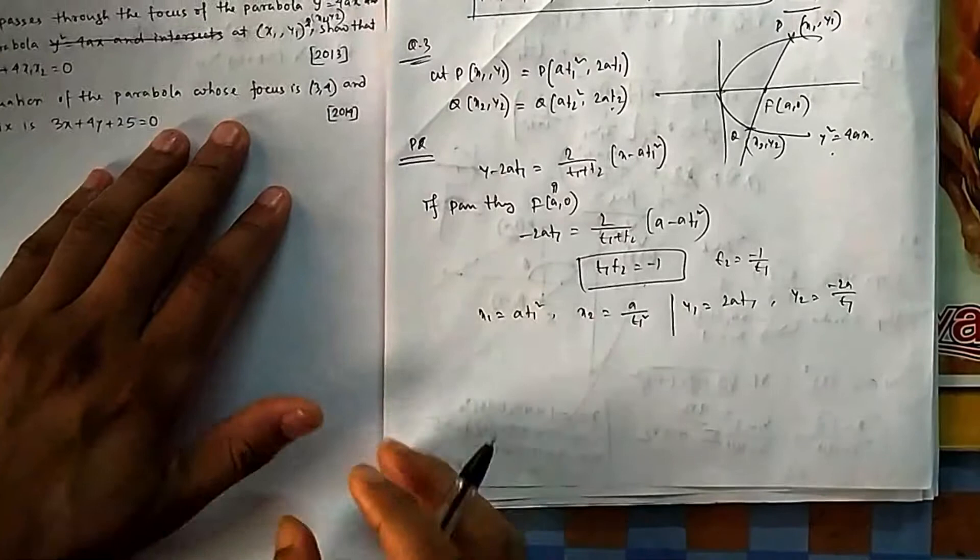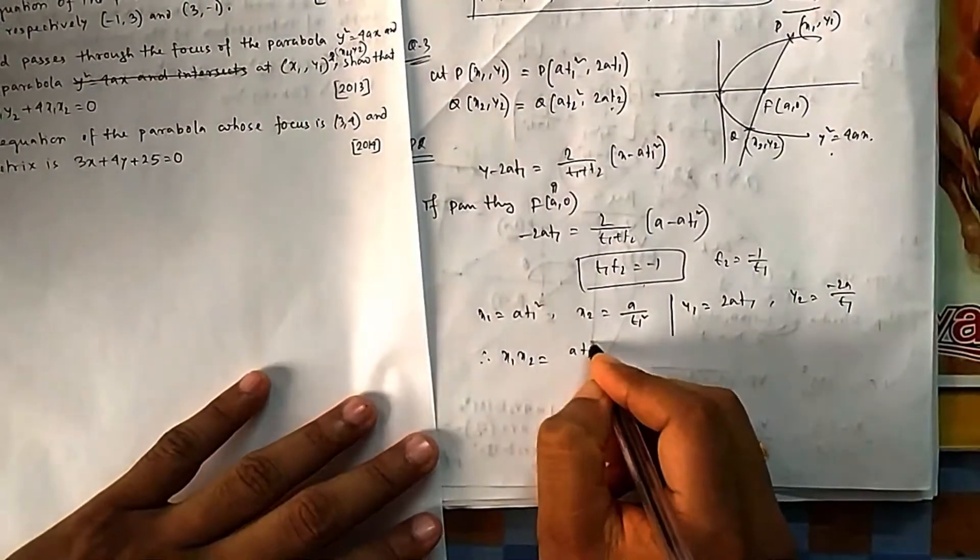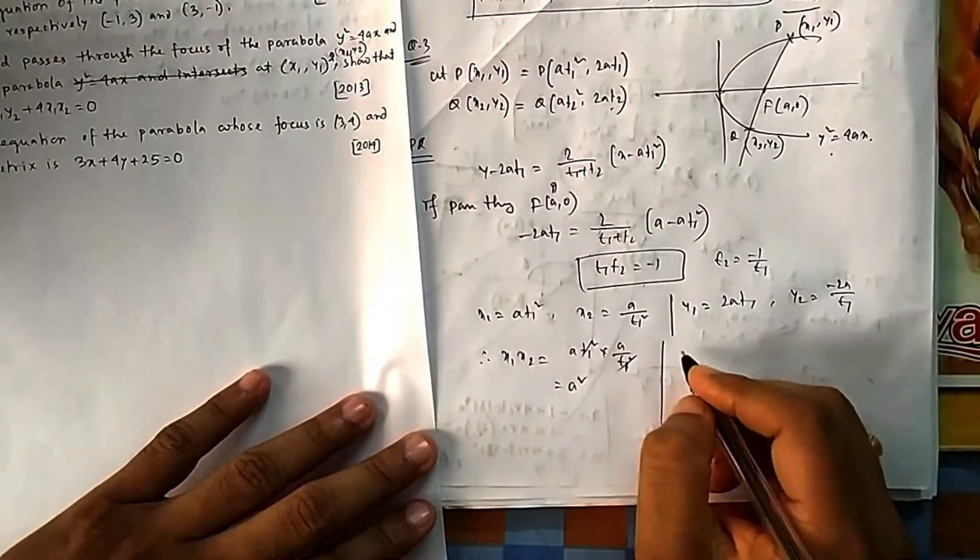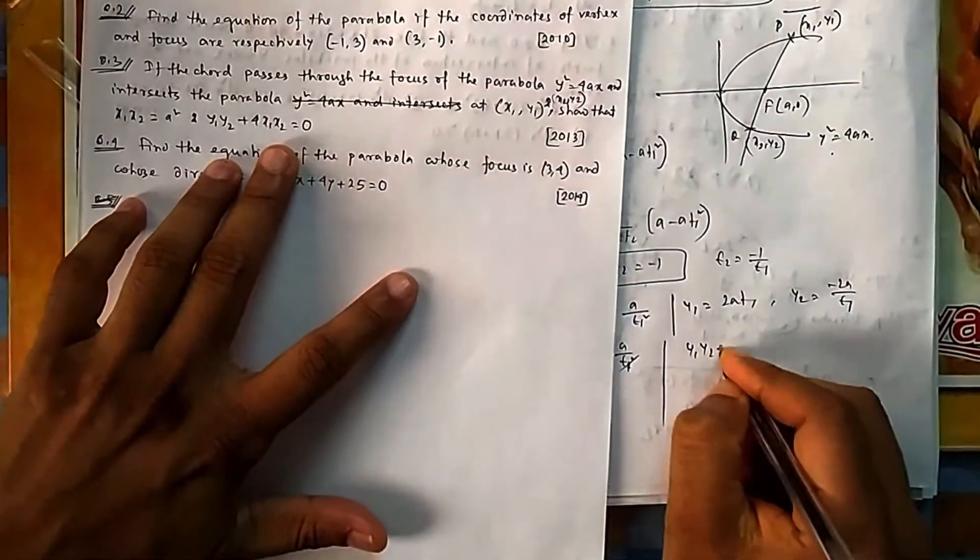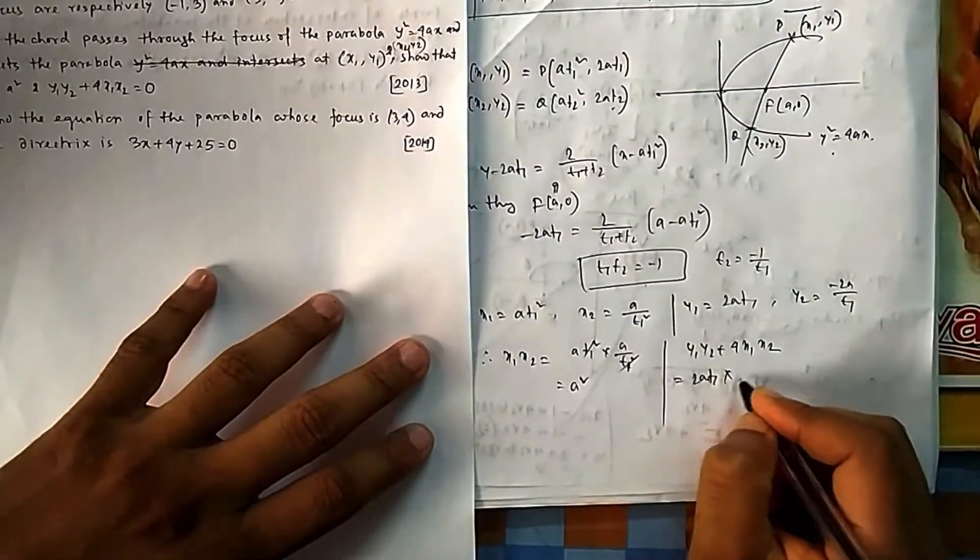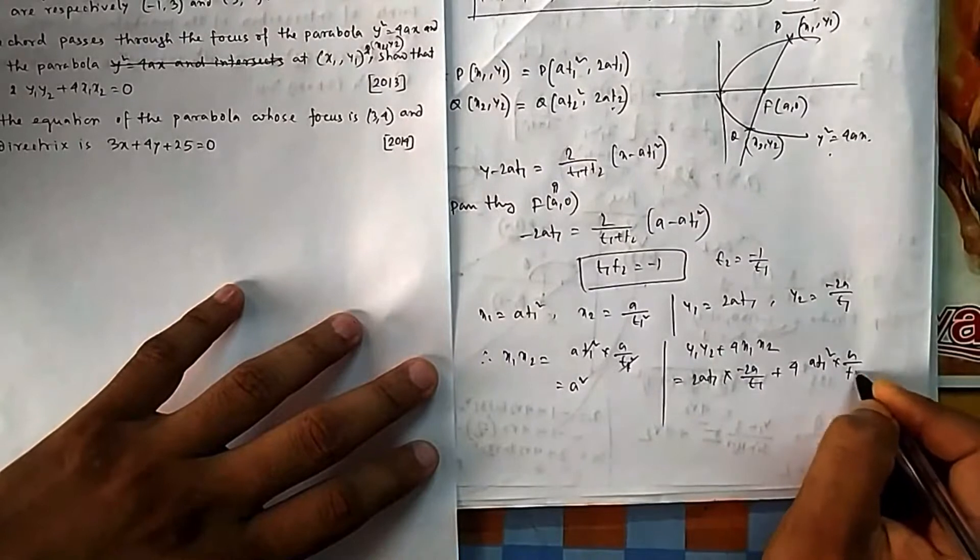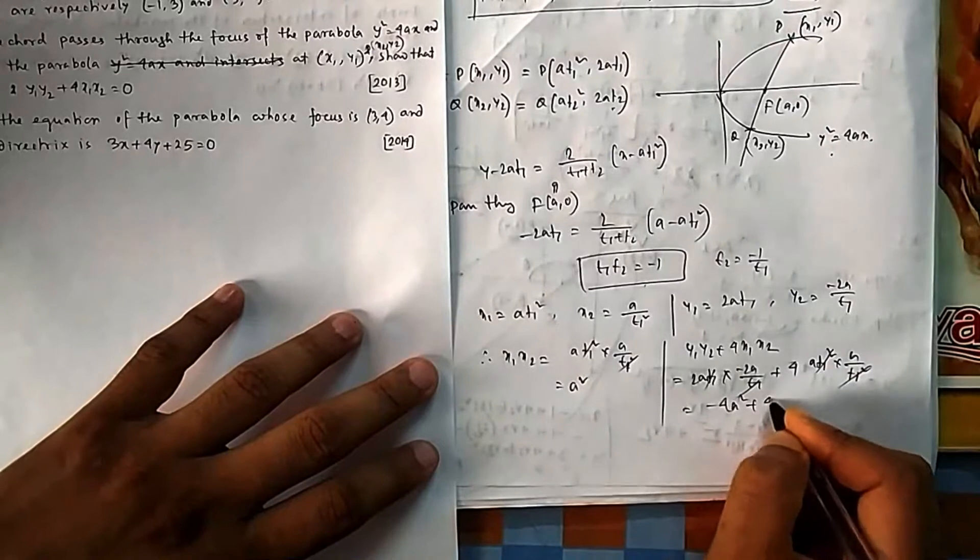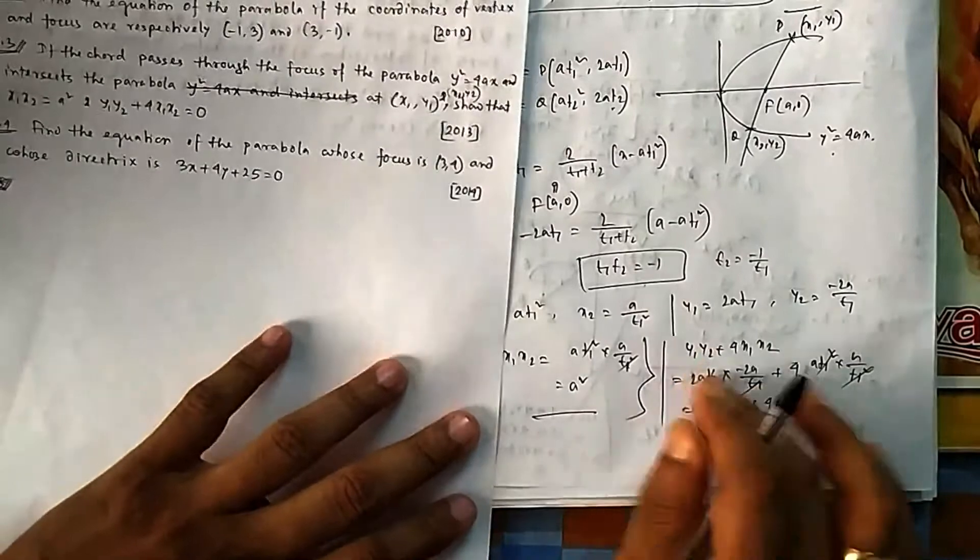So now you show what they are asking. Therefore x₁ × x₂ is equal to - if you take product of these two, what will be this one? t₁² and t₁² will be gone, so a². This is proved. And what they are asking to prove, another one is y₁y₂ + 4a² = 0. So if you put it there: 2at₁ × (-2a/t₁) + 4 × at₁² × a/t₁². This will cancel, this will get cancelled. It is -4a² + 4a² = 0. So proved, this side is also proved. Both are proved.